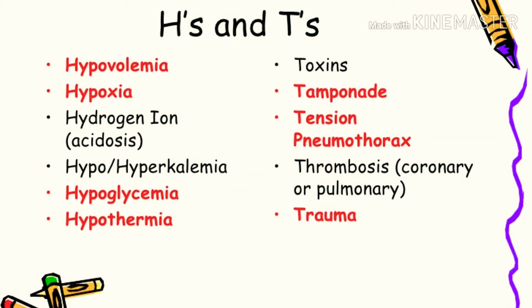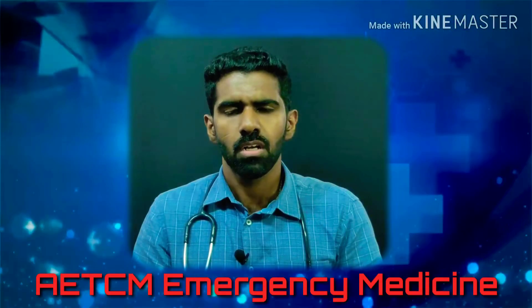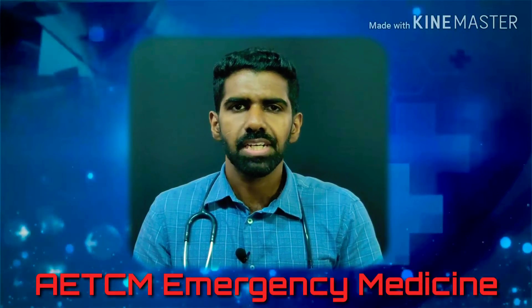The AHA also identifies the five H's and five T's as causes of bradycardia. The five H's are hypovolemia, hypoxia, hydrogen ions (acidosis), hypokalemia or hyperkalemia, and hypothermia. The five T's are tension pneumothorax, tamponade, toxins, thrombosis of the pulmonary vessels, and thrombosis of the coronary vessels.